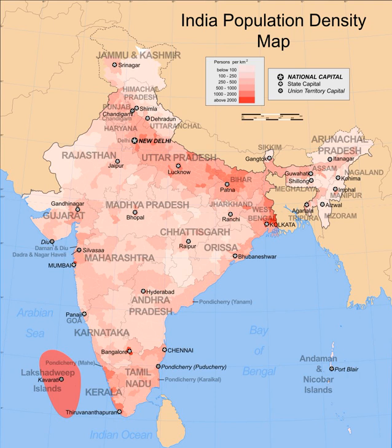Median age 27.9 years. Population growth rate 1.17%, 2017 estimate. Literacy rate 74% age 7 and above in 2011; 81.4% total population age 15–25 in 2006. Percent of population below poverty line: 22%.